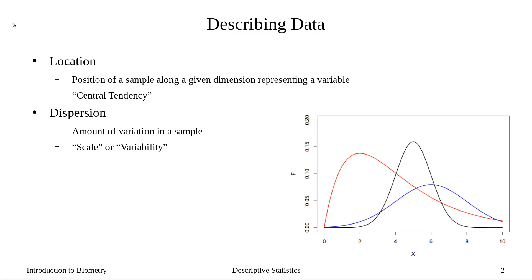When we describe the data, we're really looking at describing two different things. We're trying to describe the location, or where most of the points fall, or we're trying to describe the dispersion, or the spread of the data. With the location, you can think of it as describing central tendency — where most of our points clump. For dispersion, we're looking at the spread, scale, or variability of our data.